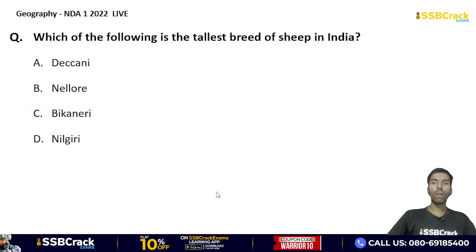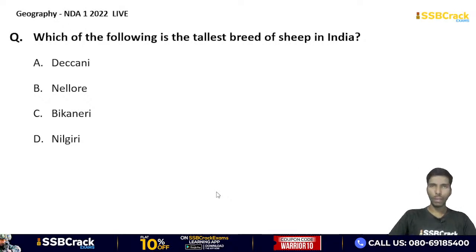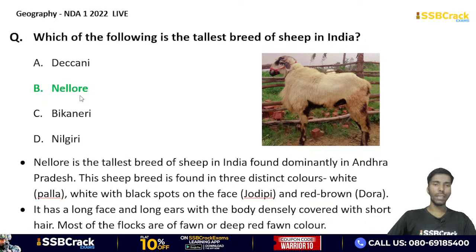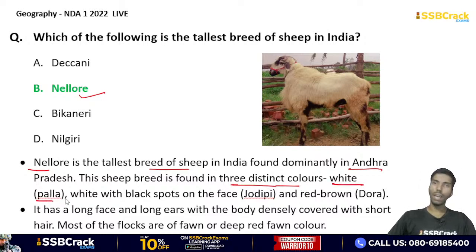Which one of the following is the tallest breed of sheep in India? Deccani, Nellore, Bikaneri, or Nilgiri? The correct answer is Nellore — the tallest breed of sheep in India, found dominantly in Andhra Pradesh. This sheep breed is found in three color varieties: white (Palla), white with black spots (Jadpi), and red-brown (Dora).